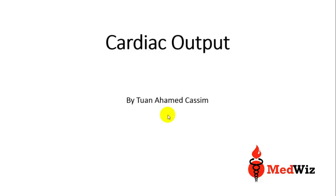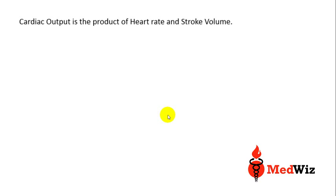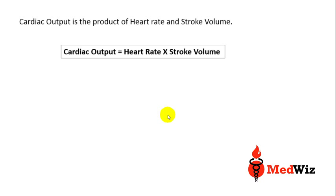Hello everyone. In this video I'll be speaking about an important component of cardiac physiology, which is cardiac output. Cardiac output is the product — meaning the multiplication — of heart rate and stroke volume. So cardiac output equals heart rate multiplied by stroke volume.